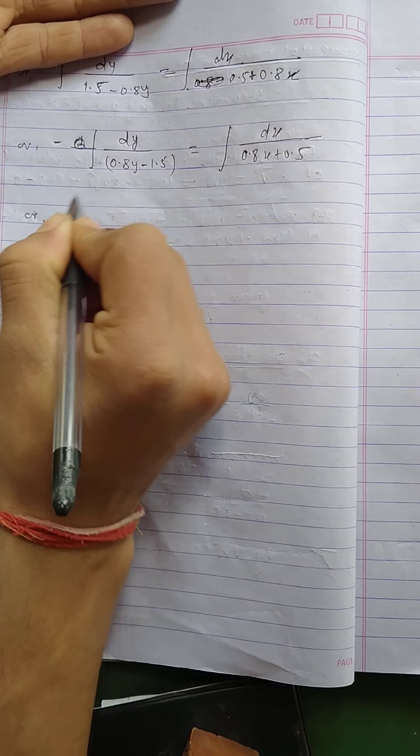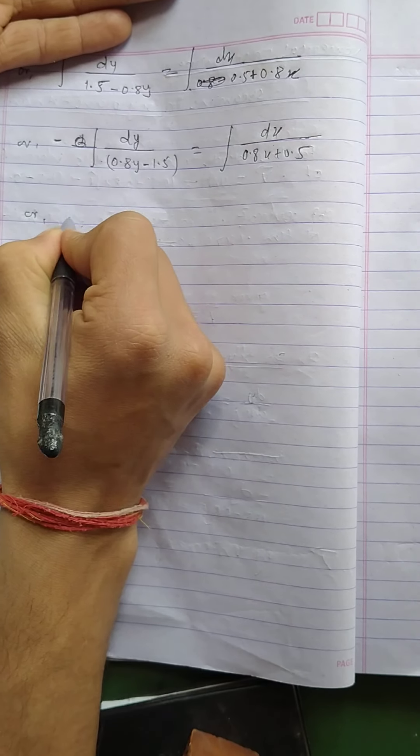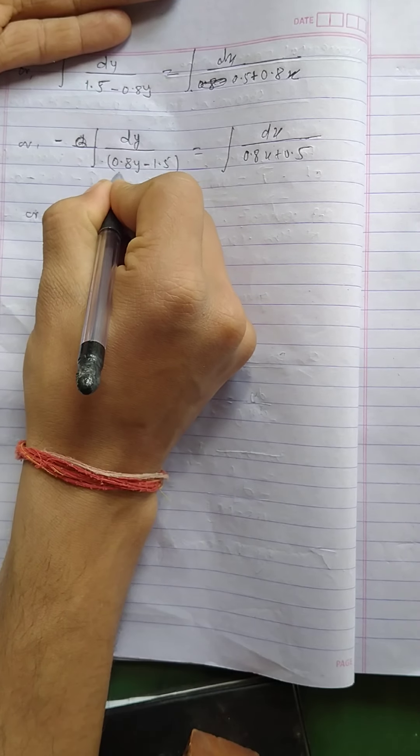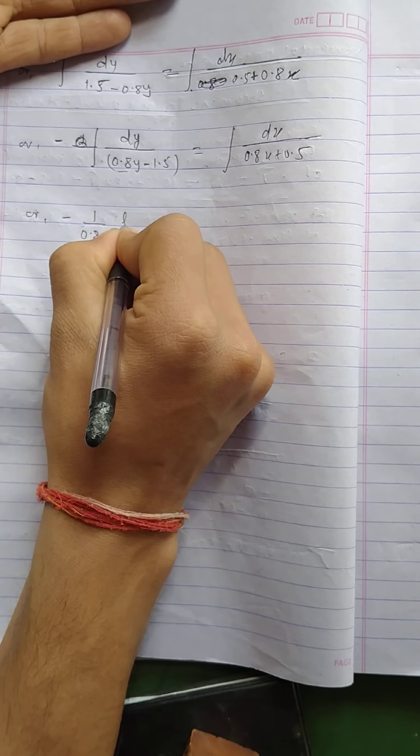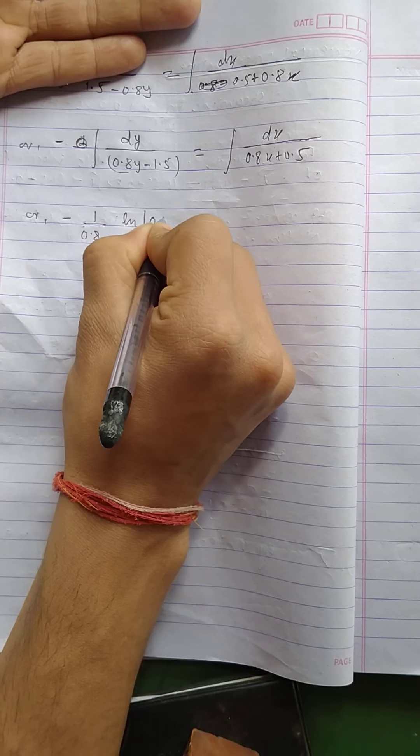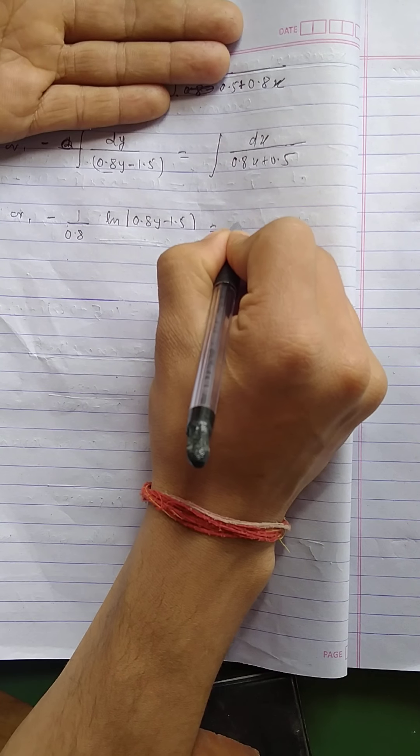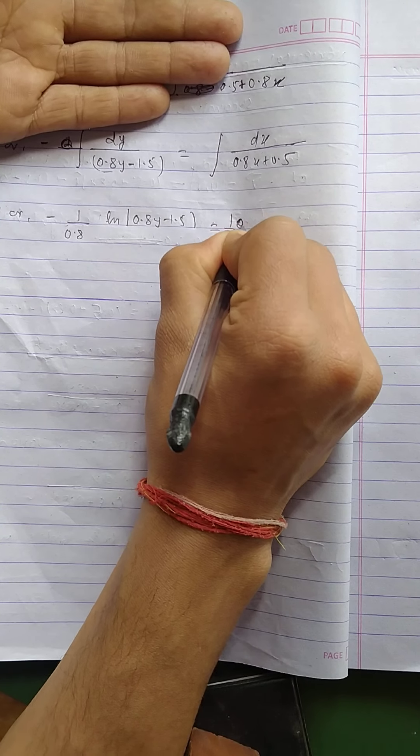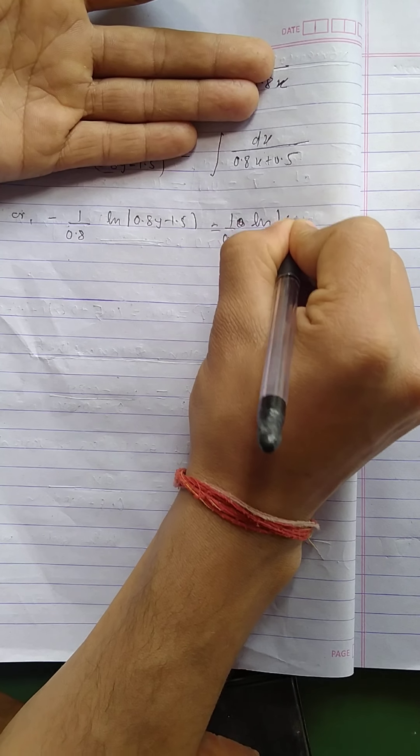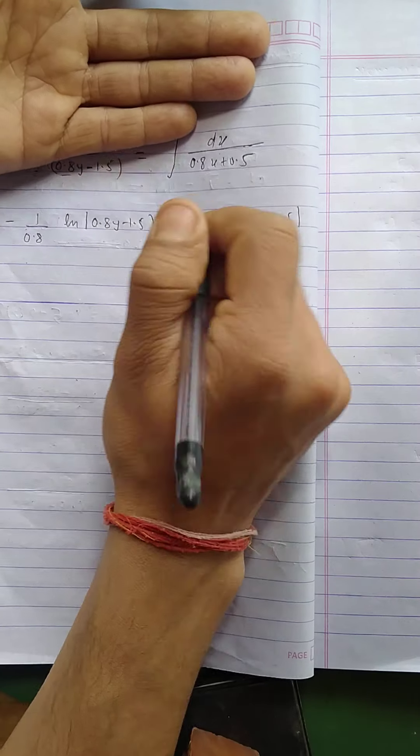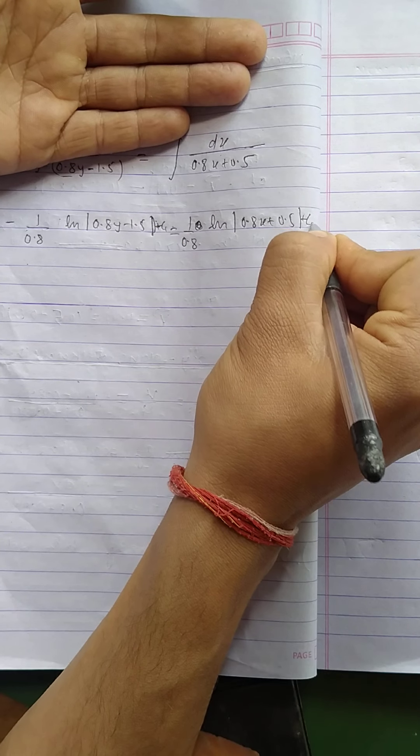Now for this type of integration, integration with respect to y, what is the coefficient of y? 1 by 0.8 ln in modulus 0.8y minus 1.5 equals 1 by 0.8 ln 0.8x plus 0.5, plus c1 plus c2.